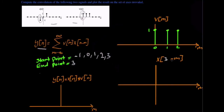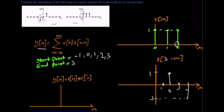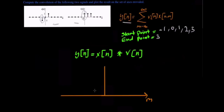The last point, which is the end point, is three. For x of three minus m, the new points will be at point two with an amplitude of one, at point three we have zero, and at point four we have an amplitude of negative one. We see if there is an overlap — yes, at point two both functions have an amplitude of one. So we multiply those together to get y of n, which equals one.